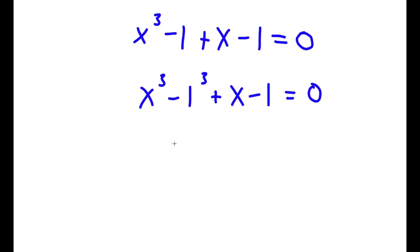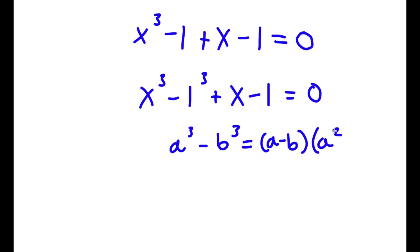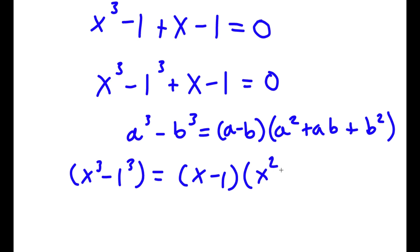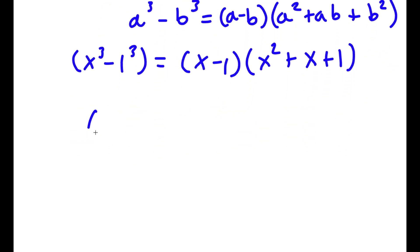Now if I have something in the form a cubed minus b cubed, this is the same thing as (a minus b)(a squared plus ab plus b squared). So x cubed minus 1 cubed equals (x minus 1)(x squared plus x plus 1). So now I have (x minus 1)(x squared plus x plus 1) plus (x minus 1) equals 0.